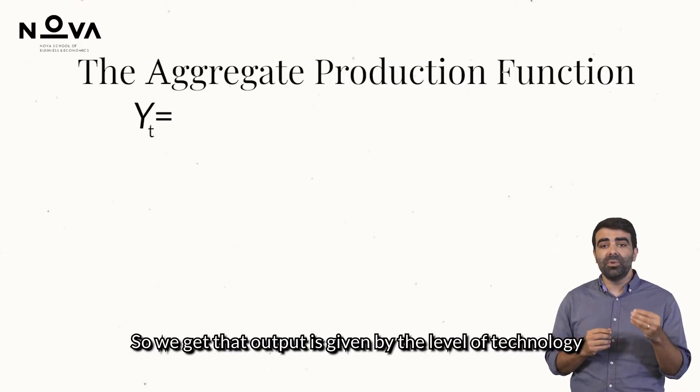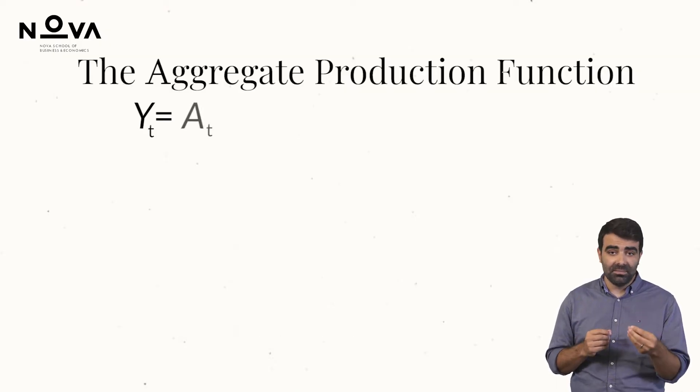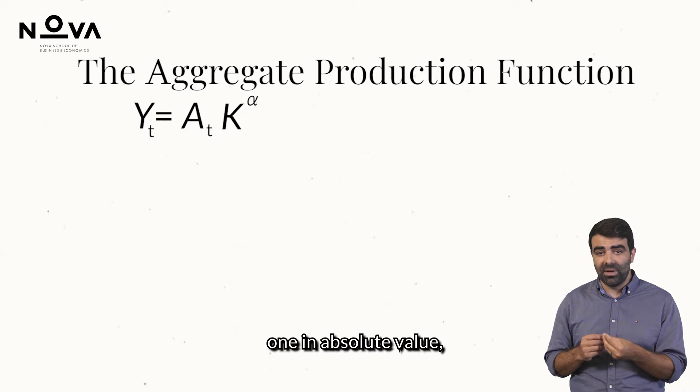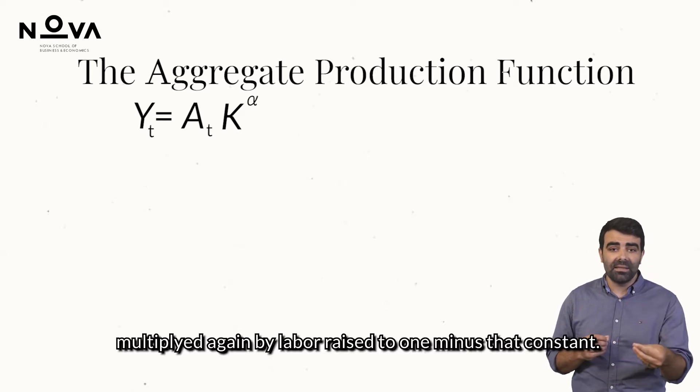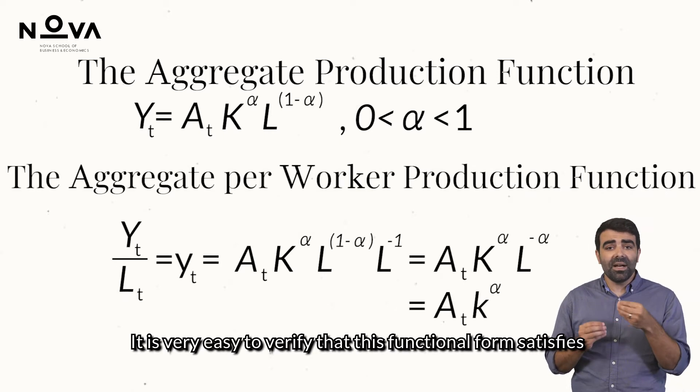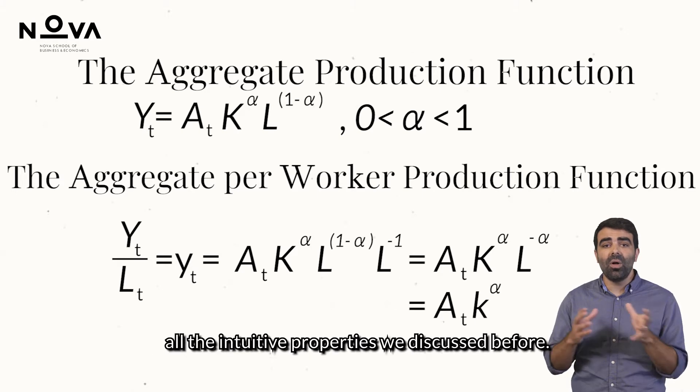The function inherited their name and became known as the Cobb-Douglas production function. So we get that output is given by the level of technology, multiplied by capital raised to a constant smaller than one in absolute value, multiplied again by labour raised to one minus that constant. It is very easy to verify that this functional form satisfies all the intuitive properties we discussed before.